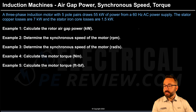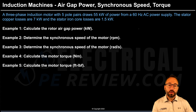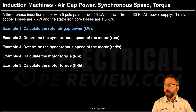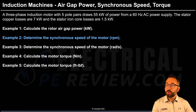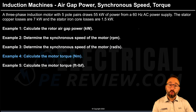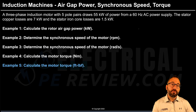The problem states: a three-phase induction motor with five pole pairs draws 55 kilowatts of power from a 60 hertz AC power supply. The stator copper losses are 7 kW, and the stator iron core losses are 1.5 kW. Example 1: calculate the rotor air gap power in kilowatts. Example 2: determine the synchronous speed of the motor in RPMs. Example 3: determine the synchronous speed in radians per second. Example 4: calculate the motor torque in newton meters. And example 5: calculate the motor torque in foot-pounds of force.